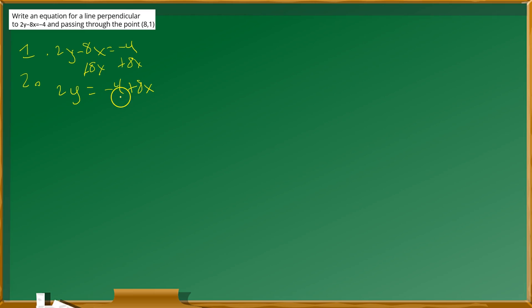At the next stage, you divide everything by 2 this way. So these are going to cross off. You're going to end up with y equals, on the right side you can write it as negative 4 over 2 plus 8 over 2. You can split that negative 4 plus 8x over 2 into two separate fractions because there's only one number in the bottom.